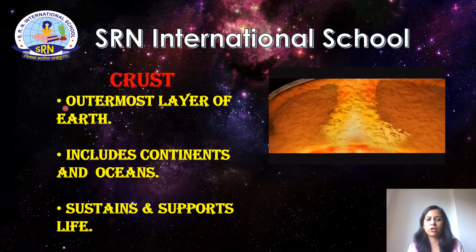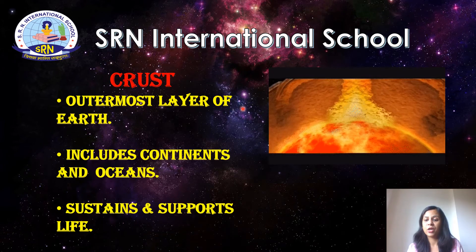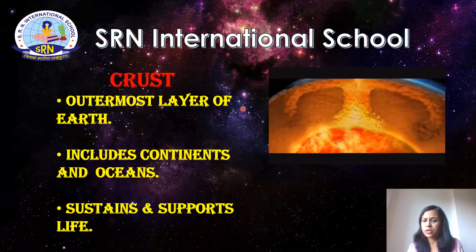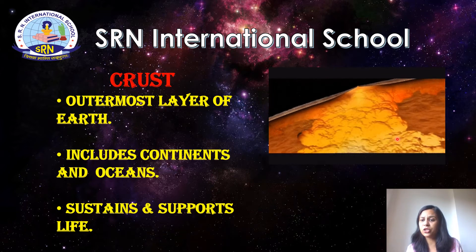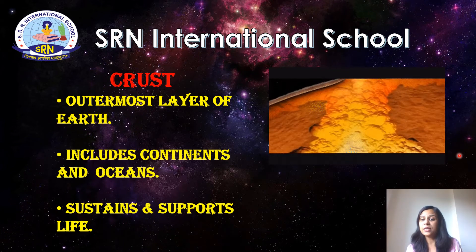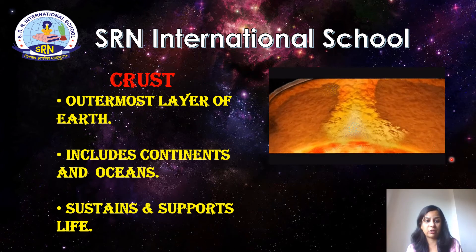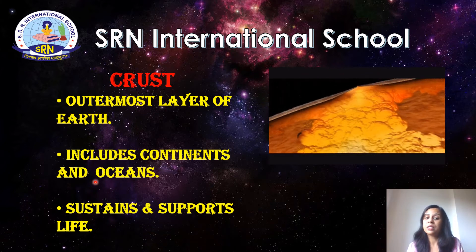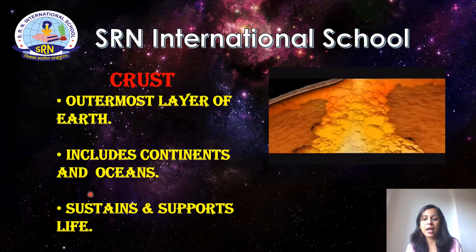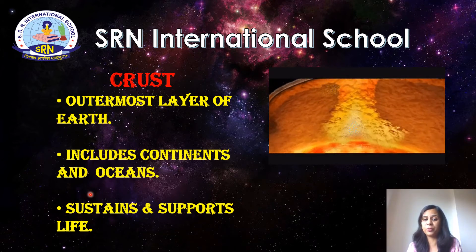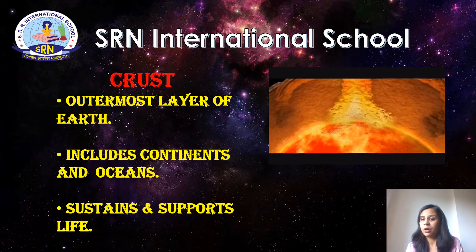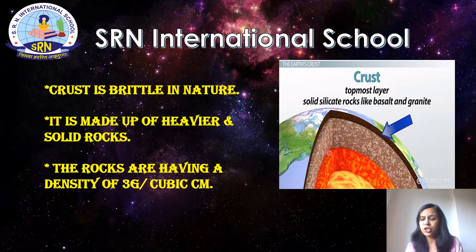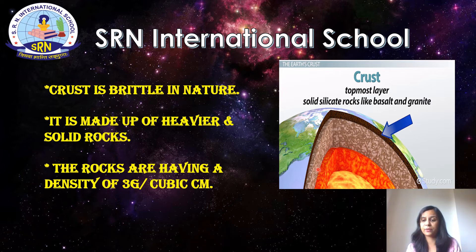The very first layer is the crust, which is the outermost layer of the earth. It has an average thickness of around 40 kilometers. The crust is subdivided into continental crust and oceanic crust, with the continental crust being thicker. The crust includes all continents and oceans on the earth's surface, sustains life forms from tiny microbial life to large animals, and is brittle in nature. It is made up of heavier rocks such as basalt, granite, and silicate rocks, with an average density of around 3 grams per cubic centimeter.